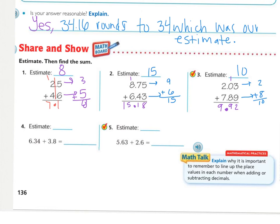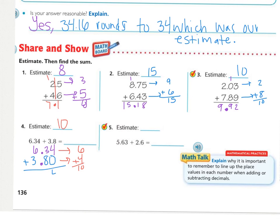For number 4, the first thing I'm going to do is put my decimals in place and then set them up: 6 and 34 hundredths, there's my decimal, and then 3 and 8 tenths, and I'll add a zero to help me stay aligned. My estimate: 6 and 34 hundredths rounds to 6, and 3 and 8 tenths rounds to 4, so my estimate is 10. Now I can find my actual: 4 plus 0 is 4, 3 plus 8 is 11 — regrouping — 6 and 3 is 9, plus 1 is 10. Bring down my decimal. My estimate is reasonable — it is close to what I got.